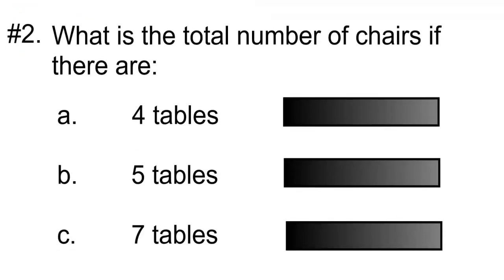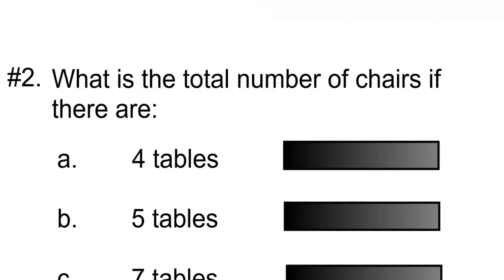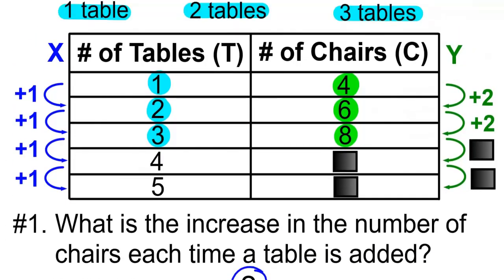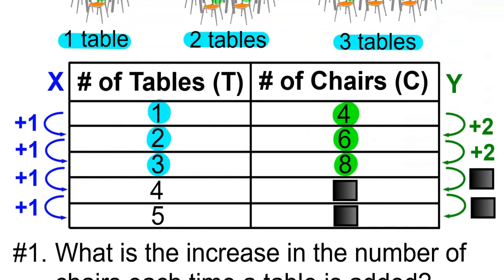Question number two: What is the total number of chairs if there are four tables? If we add one more table, we're going to add two more chairs, and eight plus two is going to be ten. So with four tables, there will be ten chairs.